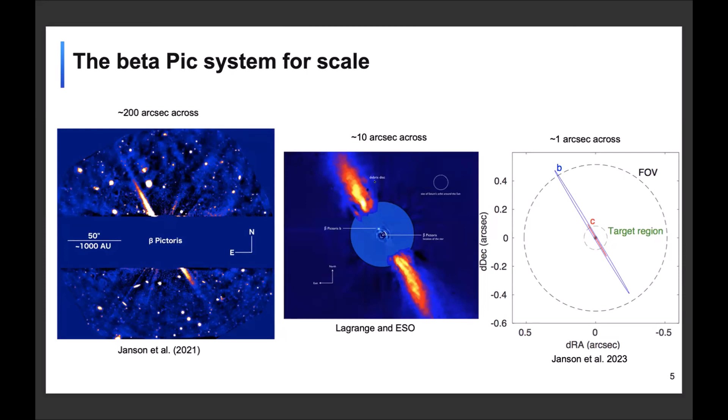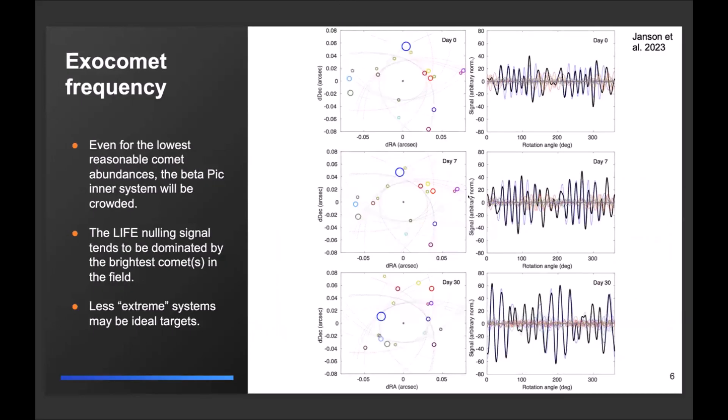So basically we're just looking at a region that's like a thousandth of the whole disk. So there's a big reservoir here of disk to get exocomets from, which is probably a leading reason to why we see so many of them. So as I said, there's actually so many exocomets in the Beta Pic system that it becomes a problem because the field of view gets basically crowded.